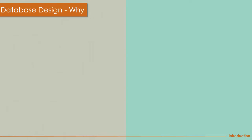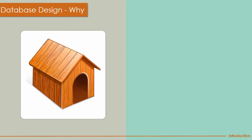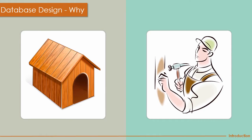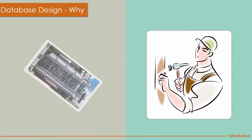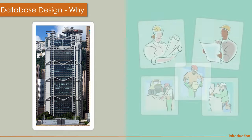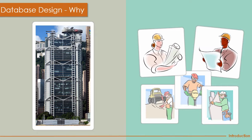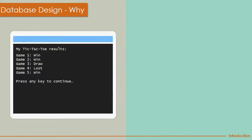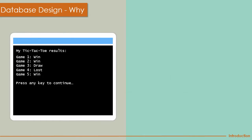Let's take another engineering discipline as an example. In civil engineering, when you build a dog house, you don't need any design — you just do it yourself. But if you need to build a 54-story high-rise building, you can't do it alone. You need different disciplines: architects, electrical engineers, civil engineers, etc. working together, and for that you need a blueprint that all stakeholders can understand.